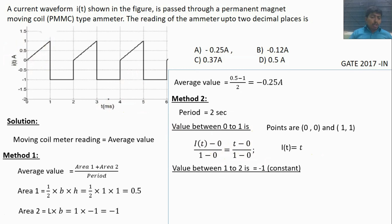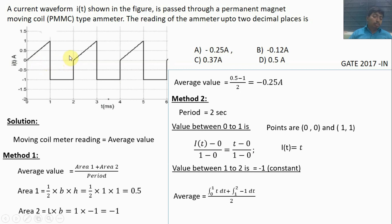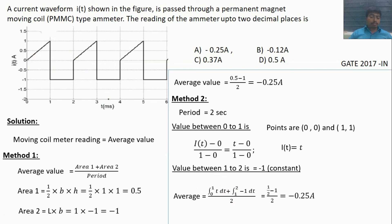The values between 1 to 2 are a constant value of minus 1. So the average value integrates from 0 to 1 with value t, plus from 1 to 2 with value minus 1, all divided by the period of 2. The average value is minus 0.25 ampere. Both methods give the same answer, so the answer is minus 0.25 ampere.